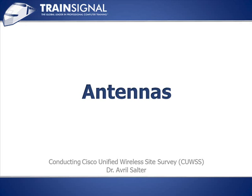Hi, I'm Avril Sorter and you're watching the Conducting Cisco Unified Wireless Site Survey Course. In this lesson we're going to talk about antennas. Antennas are incredibly important for wireless LANs because there are so many situations where we're not getting quite the coverage we need, and our option to move to an external antenna becomes absolutely critical. Although most access points are deployed with internal antennas, it's really important to understand the options you have to deploy external antennas.